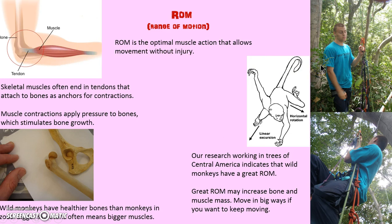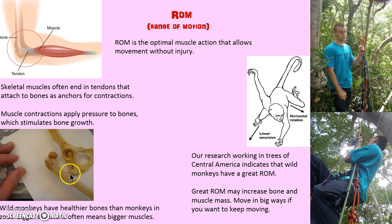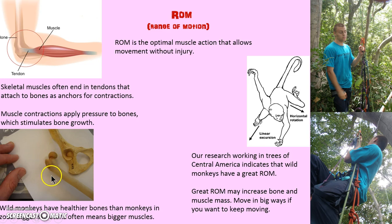Here's my son — we had to climb trees in the jungles of Central America to accurately measure the rotation and extension of monkeys. Here we are at a museum. What our work found was that wild monkeys have healthier bones because they have wide range of motion and that tendon is tugging on the bone, stimulating bone growth and increasing muscle mass. Whereas the monkeys in zoos have poor bone health and lower muscle mass. So move in big ways if you want to keep moving and stay strong.